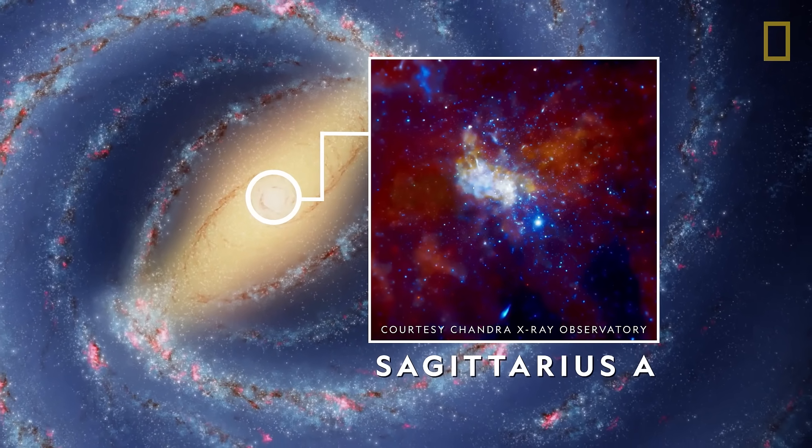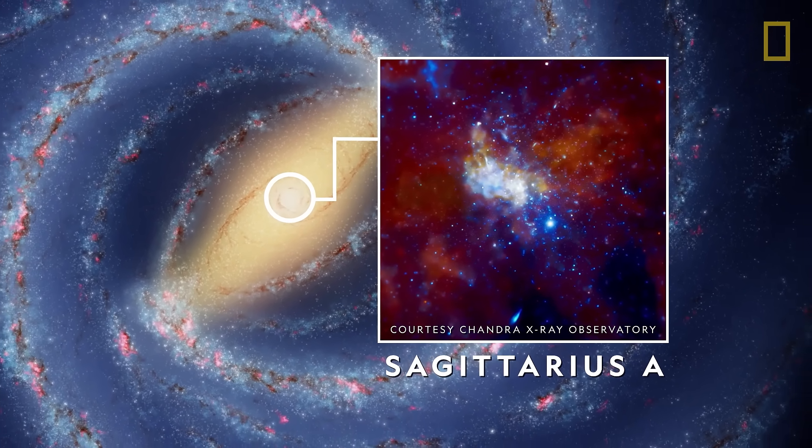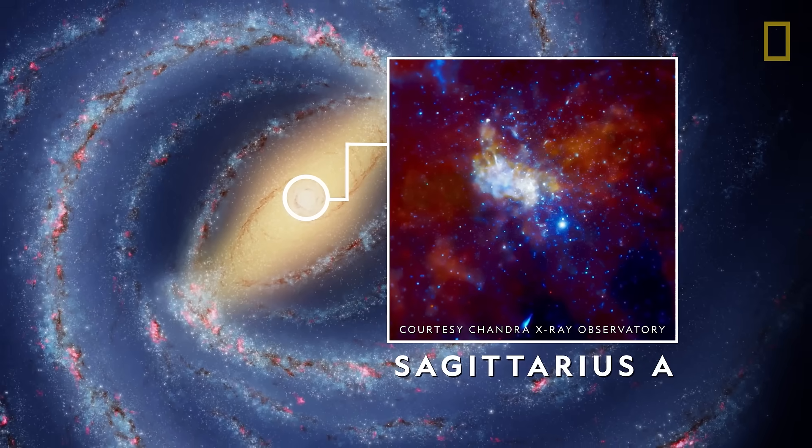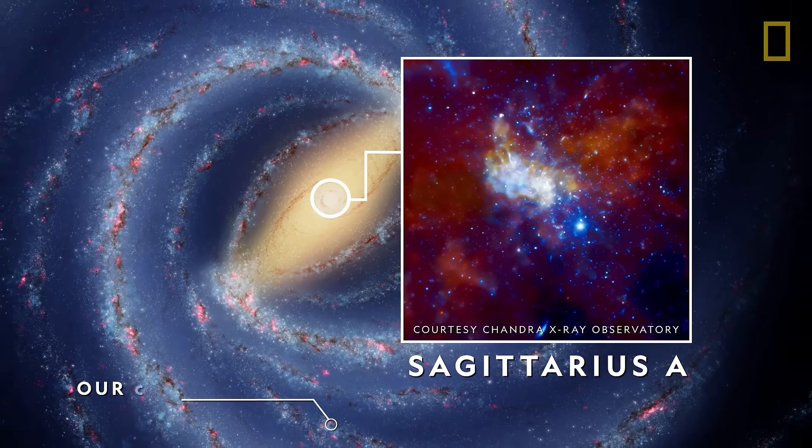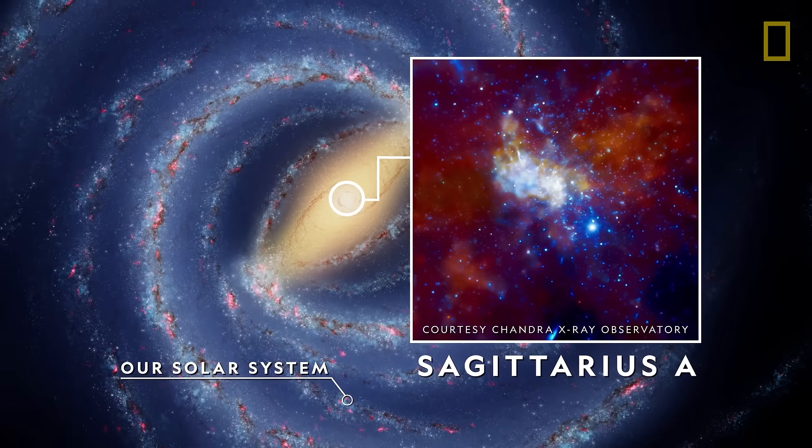Sagittarius A, the supermassive black hole at the center of the Milky Way, has a mass of roughly 4 million suns, and has a diameter about the distance between the Earth and our sun.